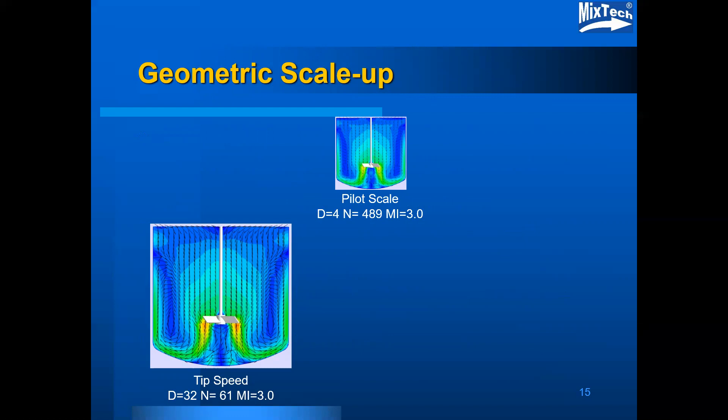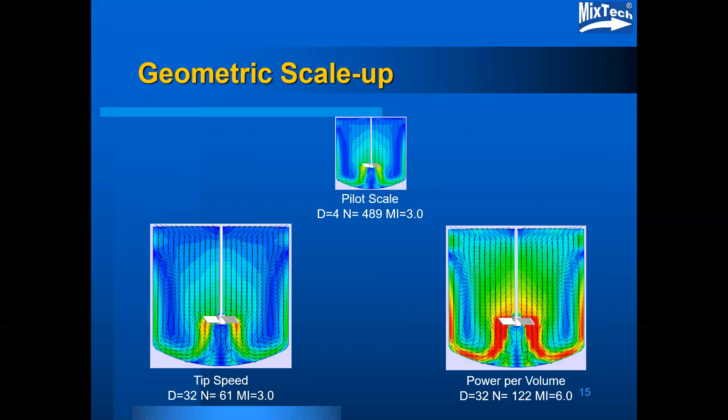This shows a geometrically similar scale-up using a computational fluid dynamics model. The pilot scale has an impeller diameter of four inches and the large scale has an impeller diameter of 32 inches, an eight to one increase in linear scale. To keep the tip speed constant, the pilot scale speed needs to be reduced by the same factor of eight. Calculating the mixing index for these conditions, the pilot scale mixing index is 3.0 and the large scale is also 3.0, demonstrating that the mixing index can be effectively used in any size vessel.